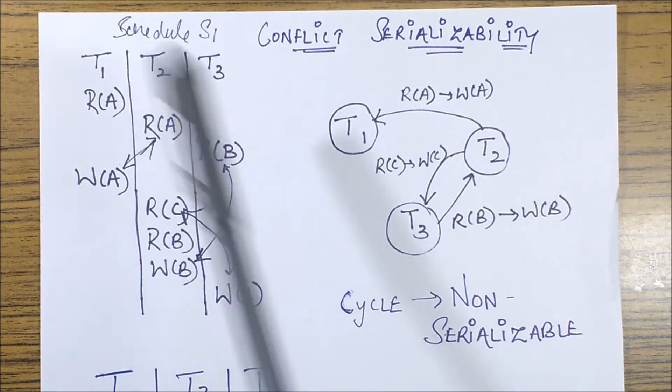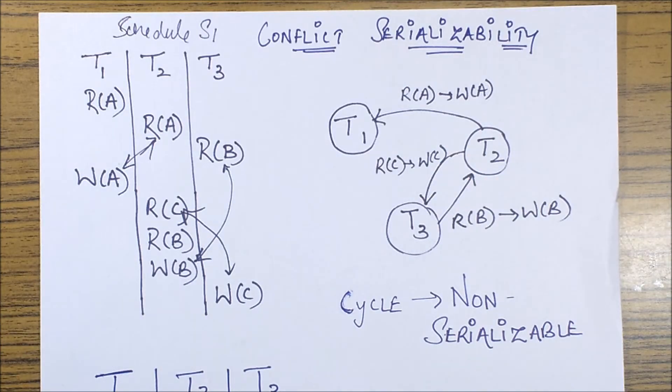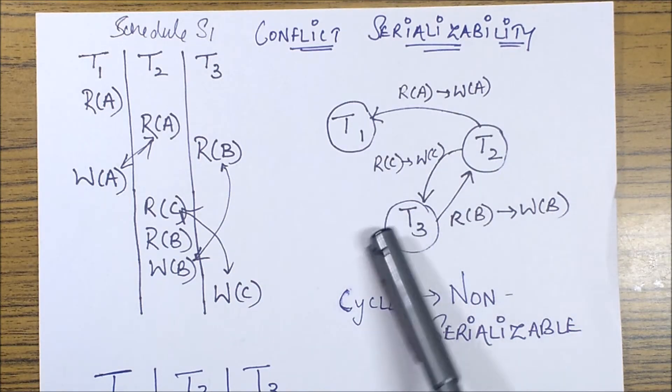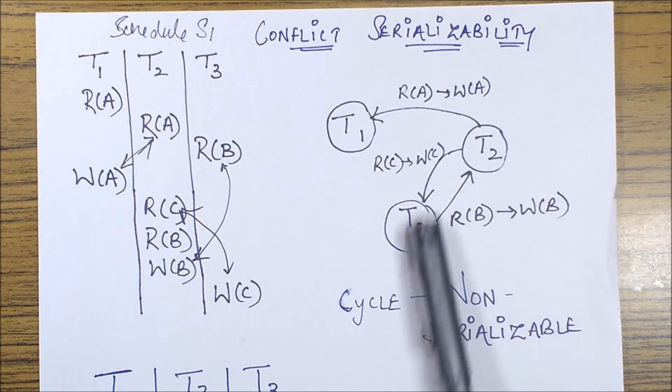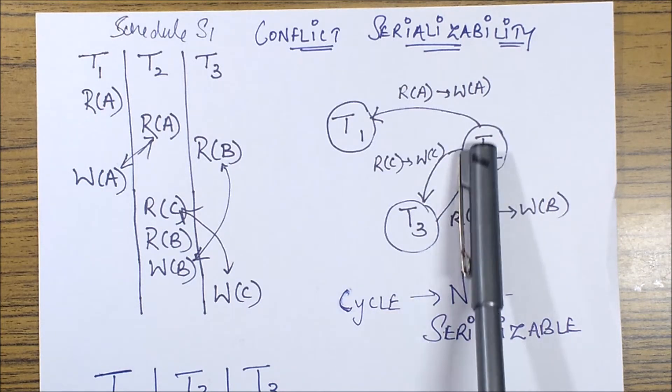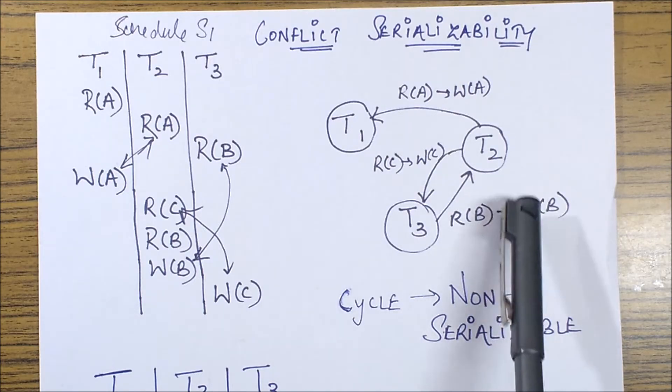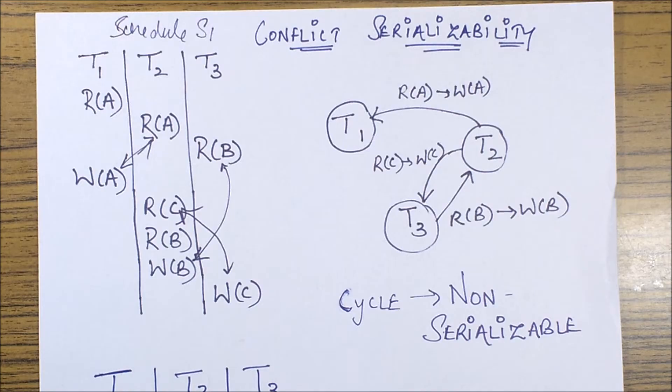So now if I analyze, since there is no other conflict pair over here our precedence graph is complete. Now if we analyze this precedence graph we know that there is a loop being formed over here because this is a cycle, I'm starting from T3 I'm ending on T3. If I start from T2 I'll end on T2. So this is a cycle that means a cycle detected over here means this is a non-serializable schedule. So we are straight away done with this solution.